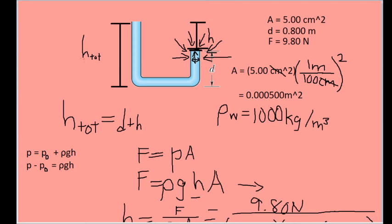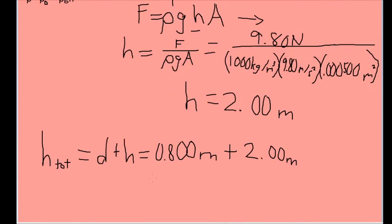We're looking for the total height though. So let's just add h to d to find the total height of the water in the left arm of the tube. So the total height is going to be equal to .800 meters plus 2.00 meters, which is going to be equal to 2.80 meters in total. Rounding to three significant figures based on the common addition rules for significant figures. And that is the total height of the water in the left arm of the tube.